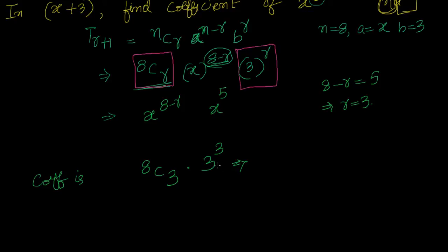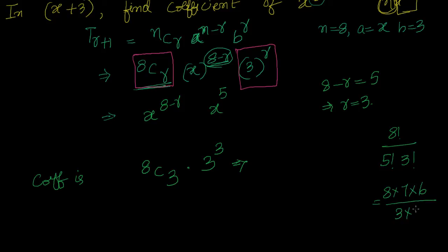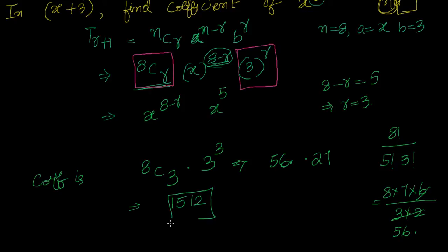Let's compute this. 8C3 is 8 factorial divided by 5 factorial into 3 factorial, which is 8 into 7 into 6 divided by 3 into 6. That gives us 56. So the coefficient is 56 into 3 cubed. 3 cubed is 27. So 56 into 27 equals 1512. That is the answer.